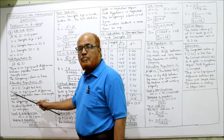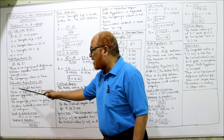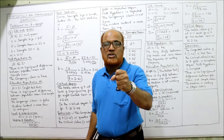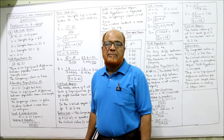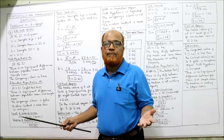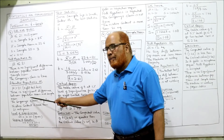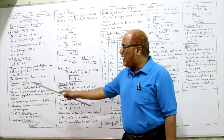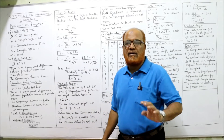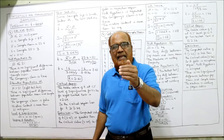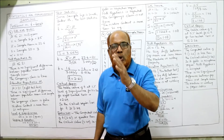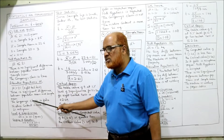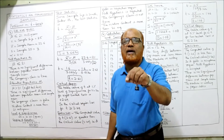The alternative hypothesis is mu greater than 21 milligrams. When it is greater than, it is a right-tail test. The null hypothesis accepts the company's claim that nicotine content is less than or equal to 21 mg. The alternative hypothesis states the company's claim is false and nicotine content is more than 21 mg. The level of significance alpha is 0.01, as given in the problem.